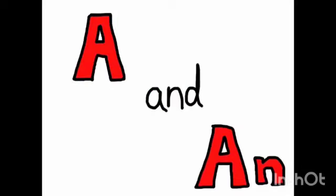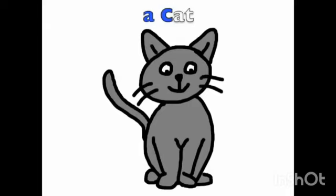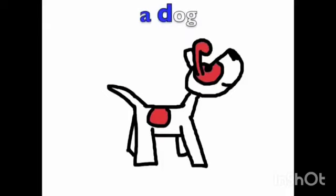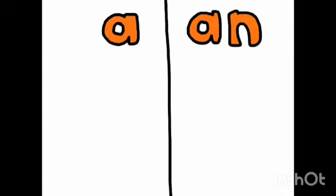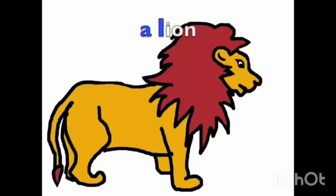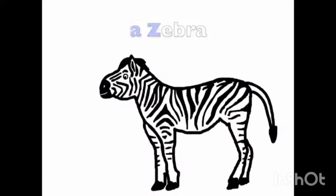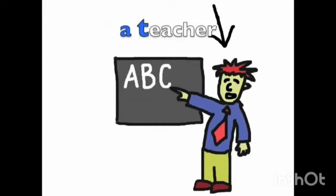A and AN — when to use A and AN. A ball, a cat, a dog, a hat. A and AN — when to use A and AN. A lion, a zebra, a box, a teacher.